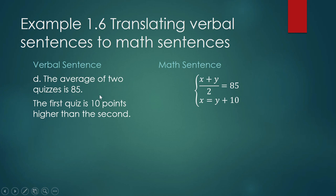The sentence, the verbal sentence here. The first quiz is 10 points higher than the second. Okay, so if this were the second, and if this were the first quiz, the first quiz is equal to y, which is lower than x. But if you want to make it equal to x, you must add 10 to y.